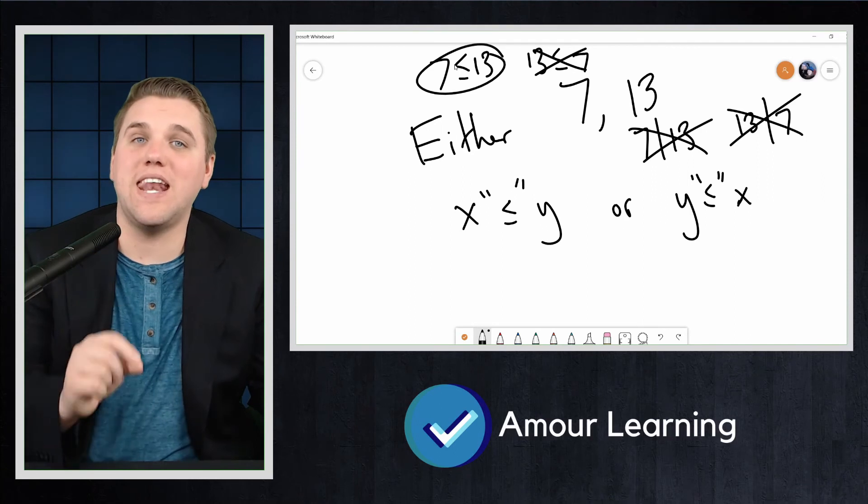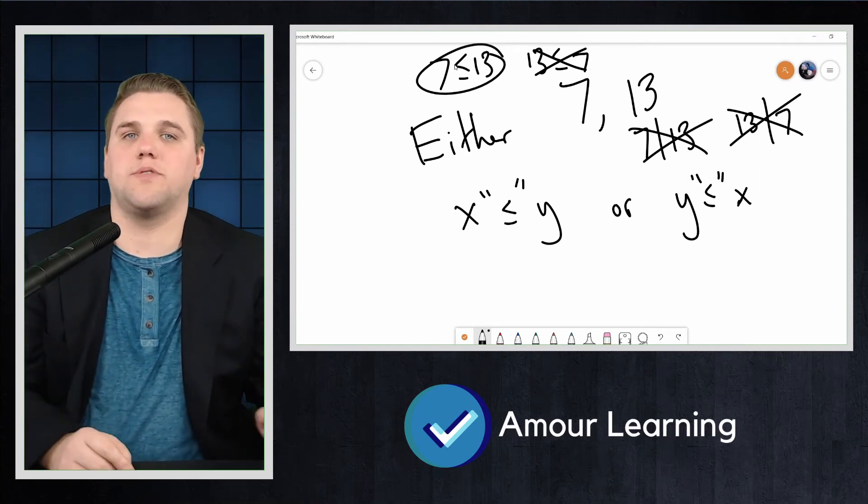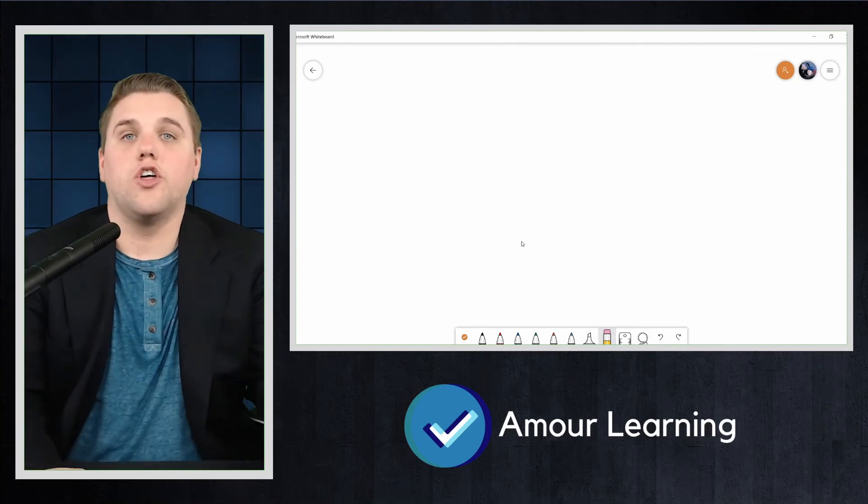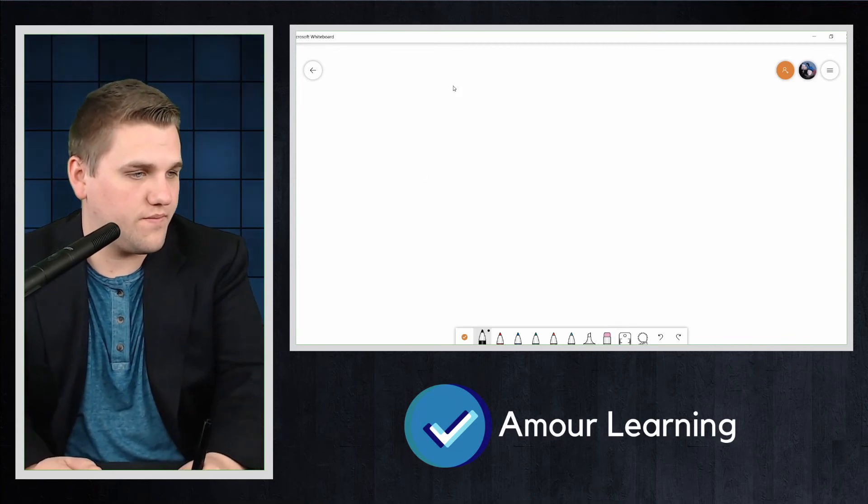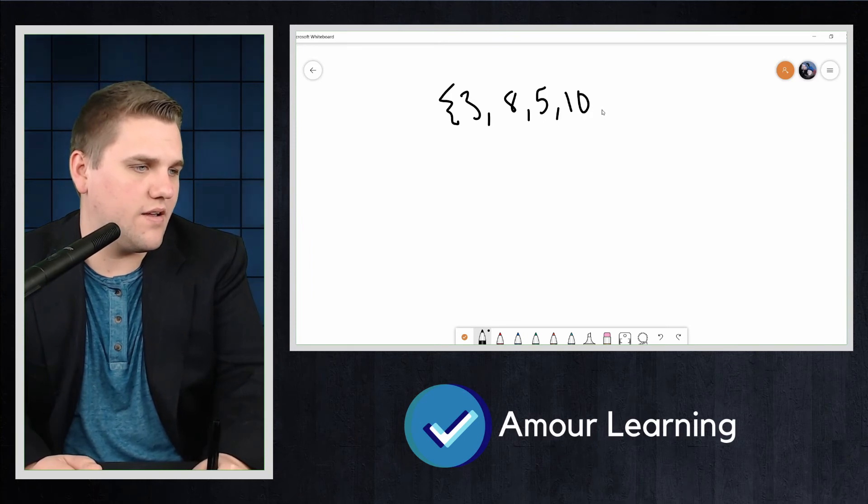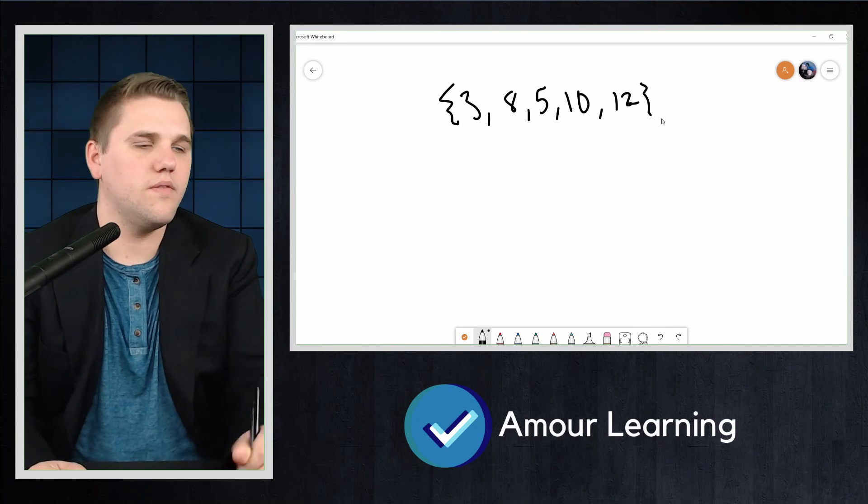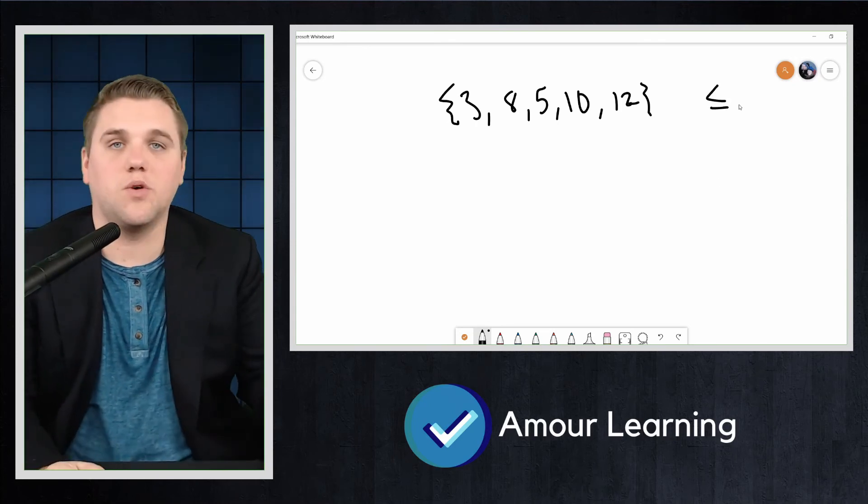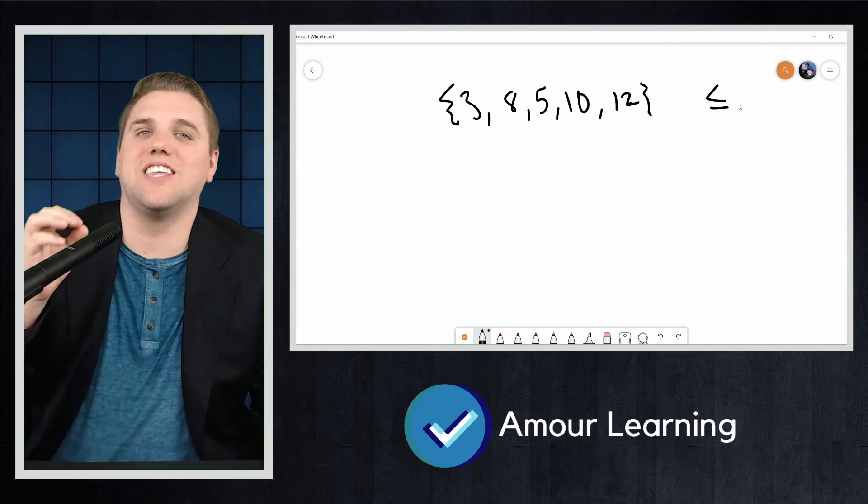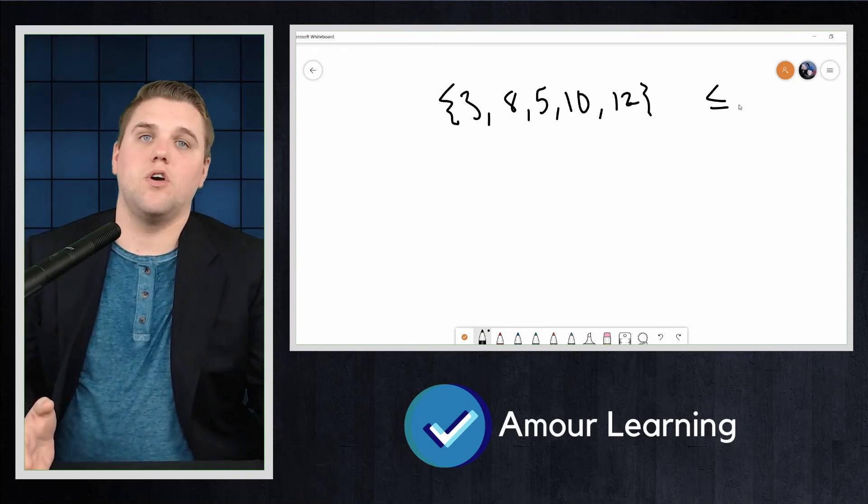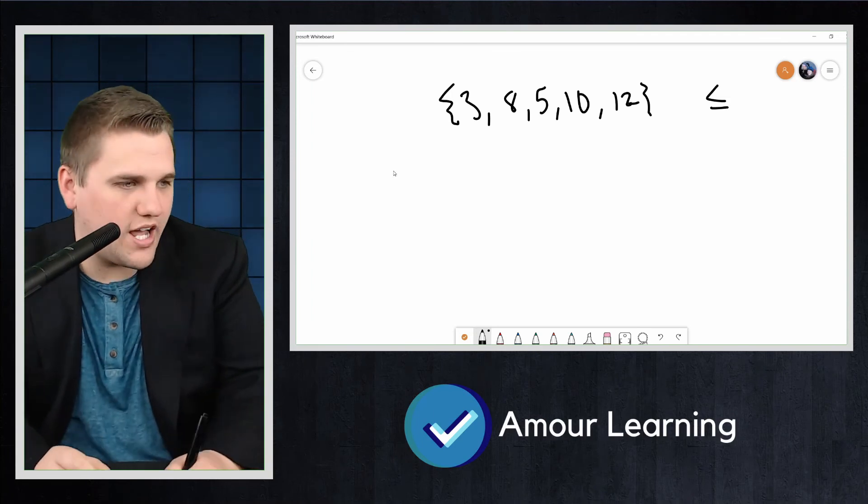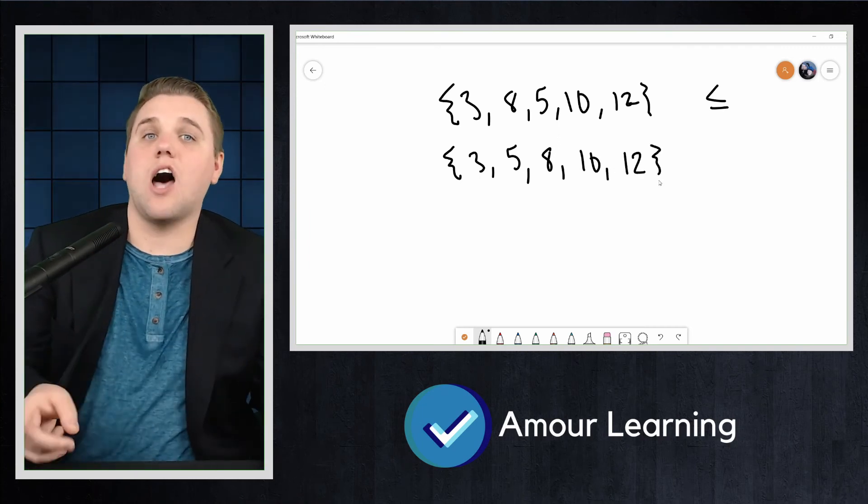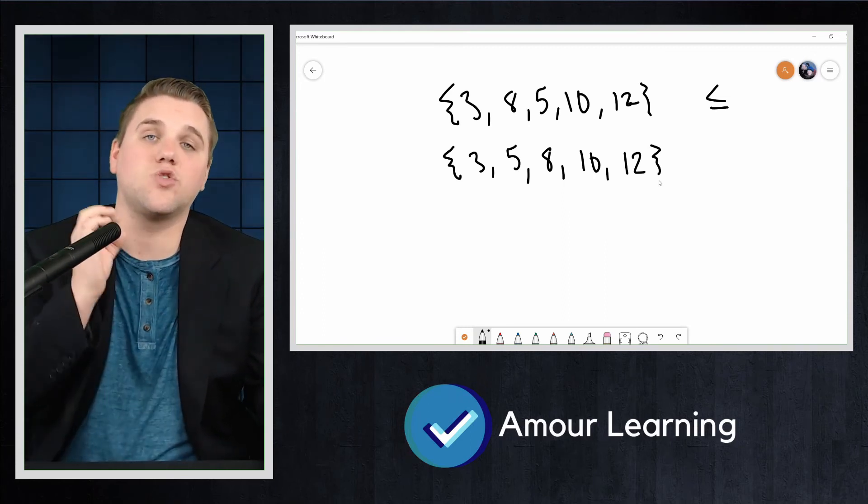Total orderings have many interesting properties. For example, they give rise to the concept of smallest and largest. For example, if I were to give you the subset {3, 8, 5, 10, 12}, what would you say is the least element? Well, under the usual ordering of less than or equal to, you would say, in this case, 3 is the least element and 12 is the greatest element. What you did is you took the set and ordered it as 3, 5, 8, 10, 12, and then saw that this representation clearly shows that 3 is the least and 12 is the greatest.